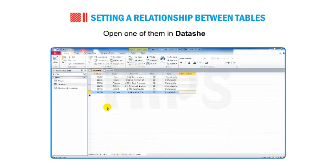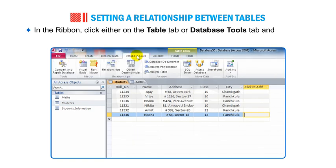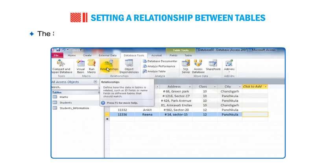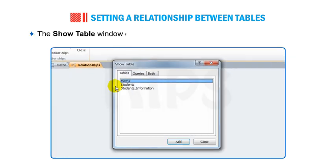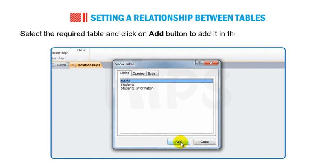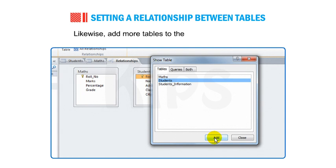Open one of them in Datasheet View. In the ribbon, click either on the Table tab or Database Tools tab and select the Relationships button in the Relationships group. The Show Table window opens up displaying the list of tables in the database. Select the required table and click the Add button to add it in the Relationships window. Likewise, add more tables to the Relationships window.